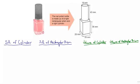We're going to calculate the surface area and the volume of this composite object. This composite object is a nail polish bottle, and it's made up of two three-dimensional objects: a cylinder and a rectangular prism.